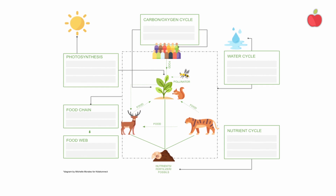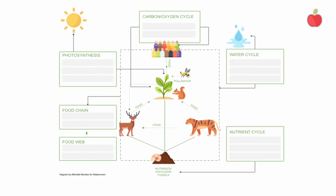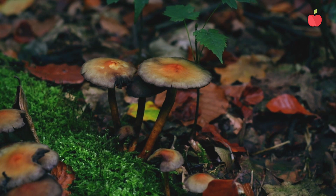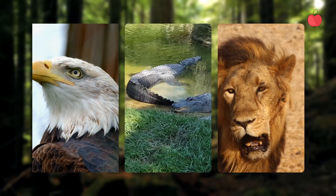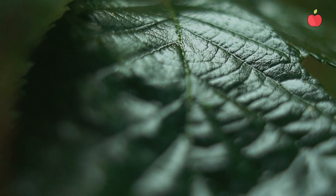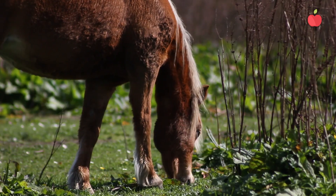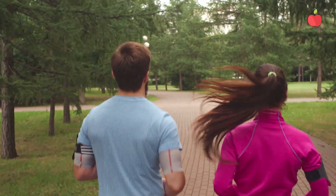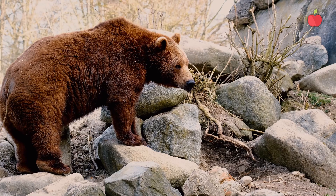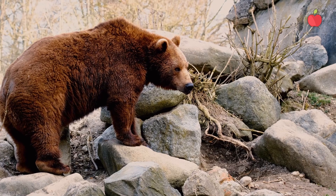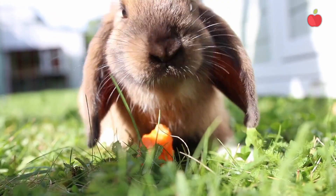Ecosystems are amazing communities of organisms creating a delicate web of life. Each component is crucial in maintaining balance, from the tiniest microbes to the largest predators. For example, plants convert sunlight into energy through photosynthesis, providing food and oxygen for other organisms. Herbivores then feed on plants, carnivores hunt herbivores, and decomposers break down dead organic matter, recycling nutrients back into the ecosystem.